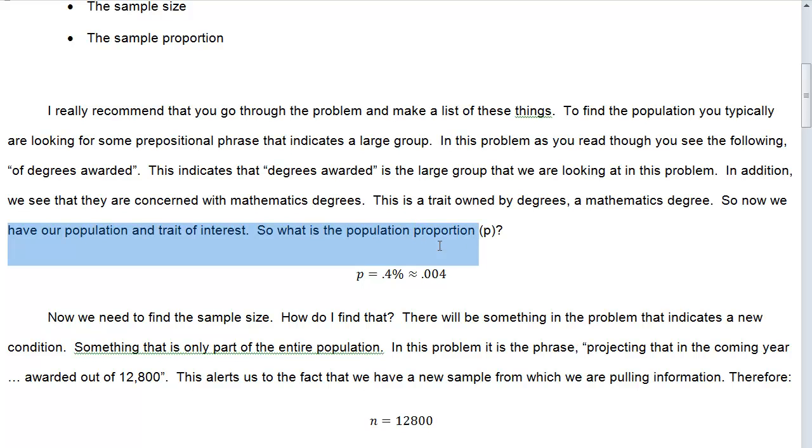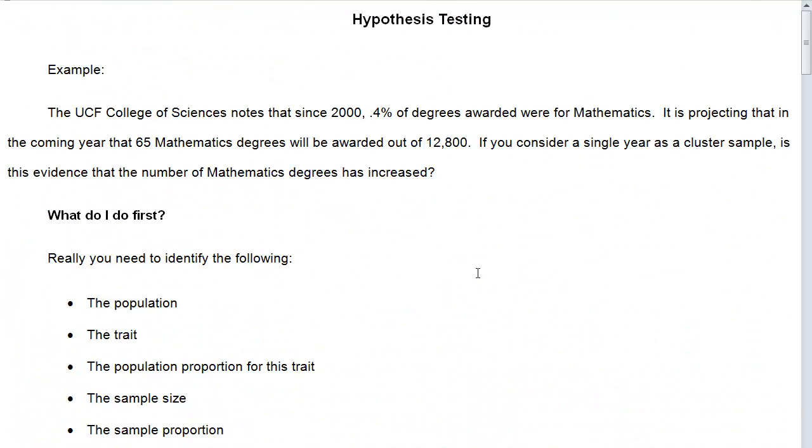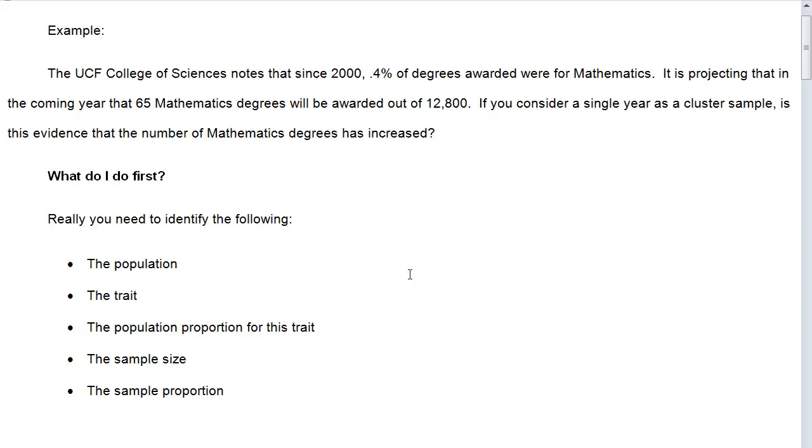What is the population proportion, the P? Here, P is equal to 0.04%, or as a proportion, 0.004.